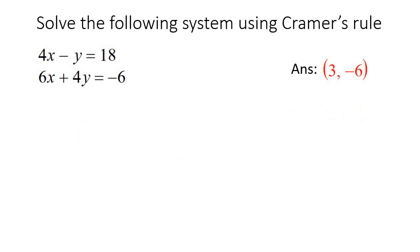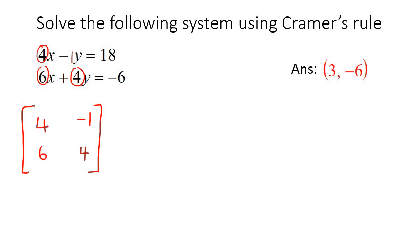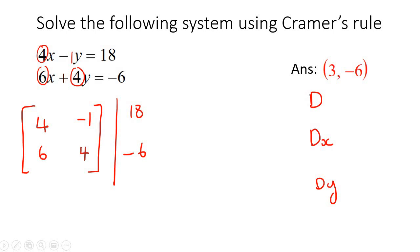What you're going to do is turn the system into a matrix, because Cramer's Rule is a matrix method to solve a two-variable system. You take the coefficients in the front and turn them into a matrix — for example, 4, negative 1, 6, and 4 — and then put the constants 18 and negative 6 on the side. We need to work out three things: the determinant D, the determinant of x (Dx), and the determinant of y (Dy). If we can get those three things, then we're good to go.